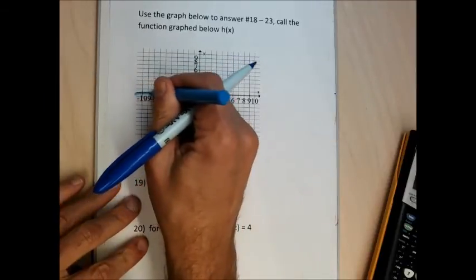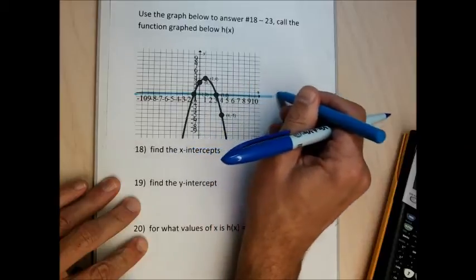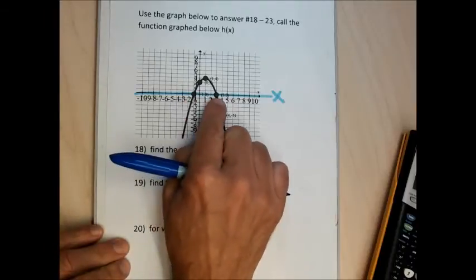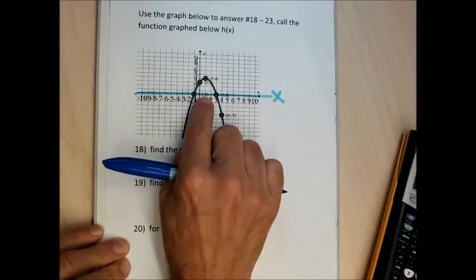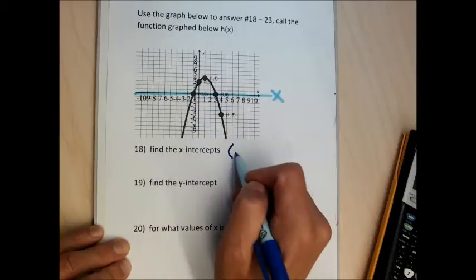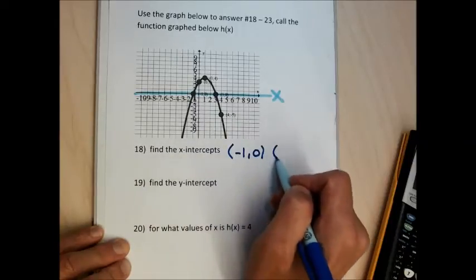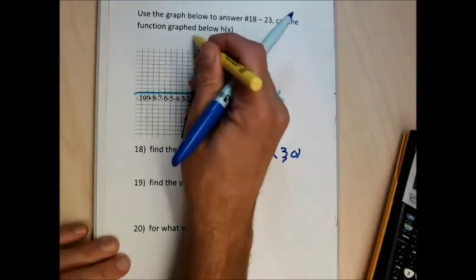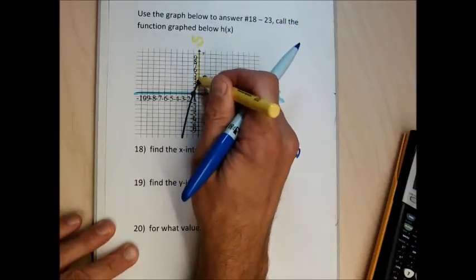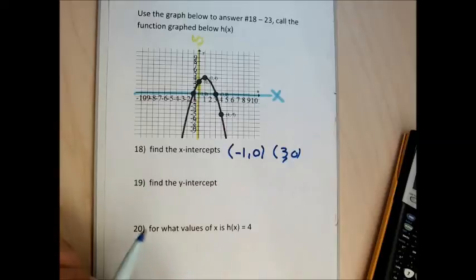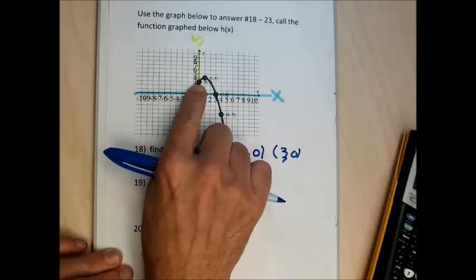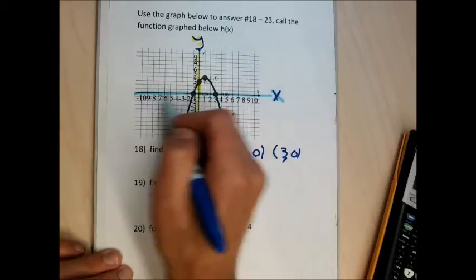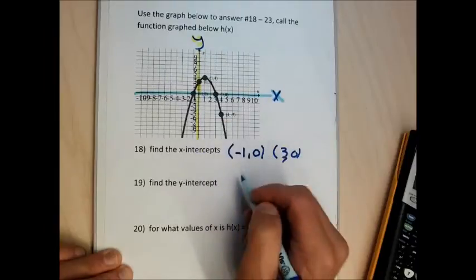Problem 18 asks for x-intercepts. To find x-intercepts, I look along the x-axis — any point marked on the x-axis is an x-intercept. There are two points marked: (-1, 0) and (3, 0). So the x-intercepts are (-1, 0) and (3, 0). Problem 19 wants the y-intercept. I go up and down the y-axis — the point on the y-axis is (0, 3). Points on the x-axis give x-intercepts; points on the y-axis give y-intercepts.